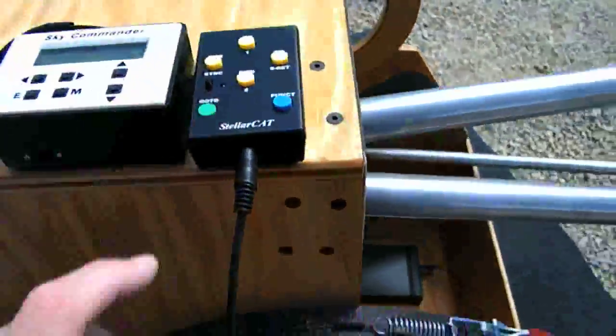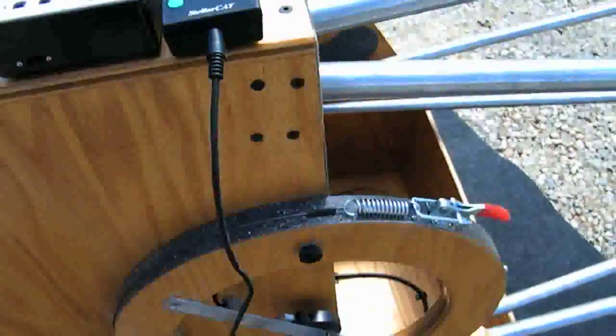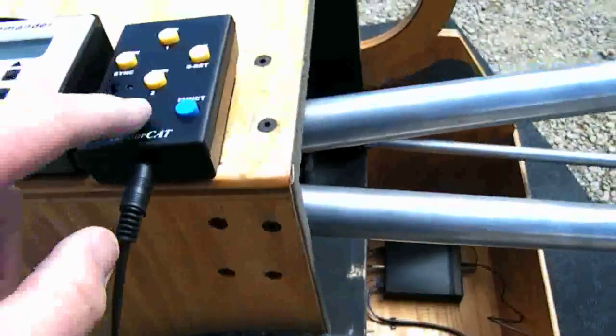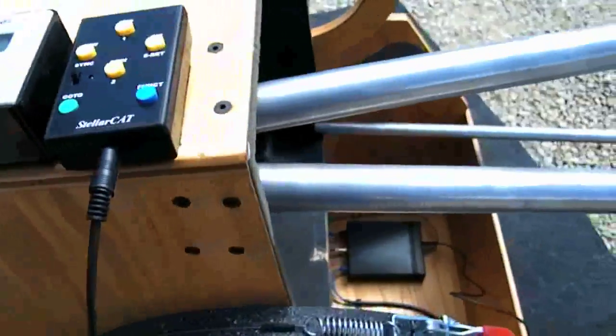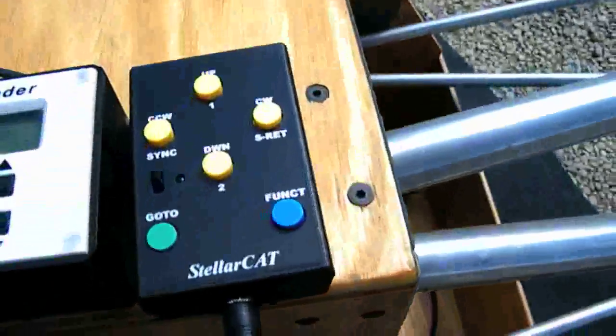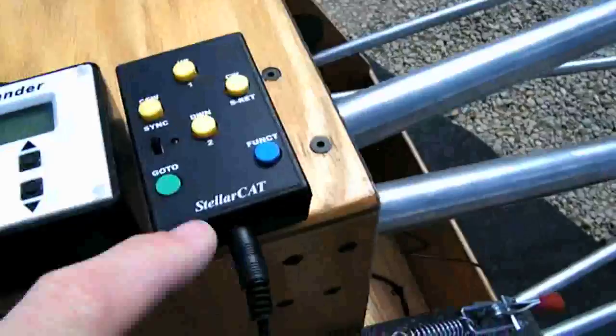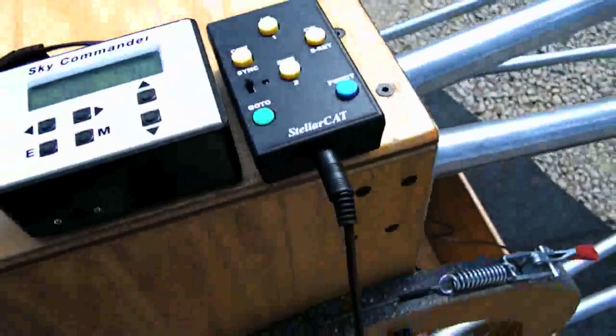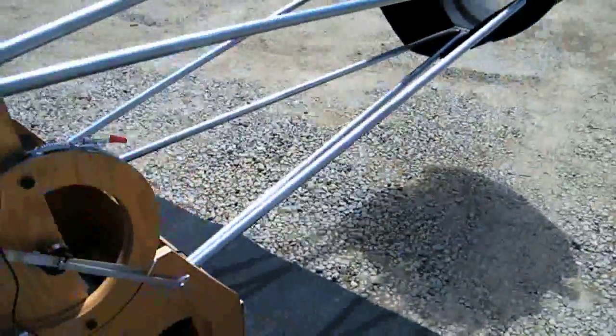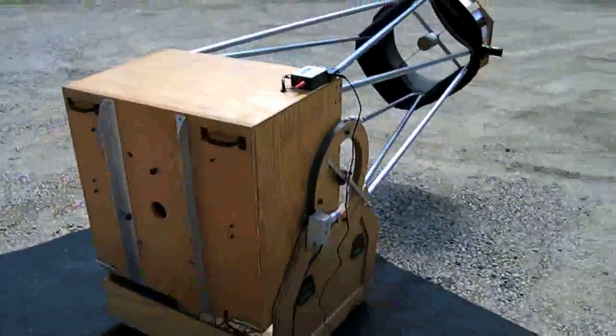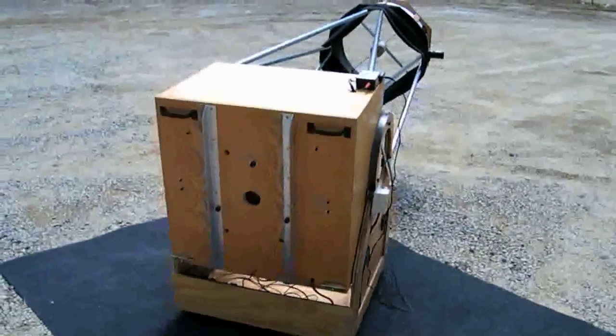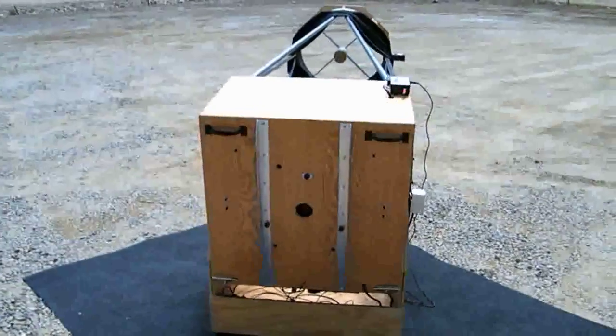Now let's just swing it around here. There we go. It's gonna look terrible here in daylight. I've got this set up right now to swing around about five degrees a second, which is pretty amazing fast for this big telescope.